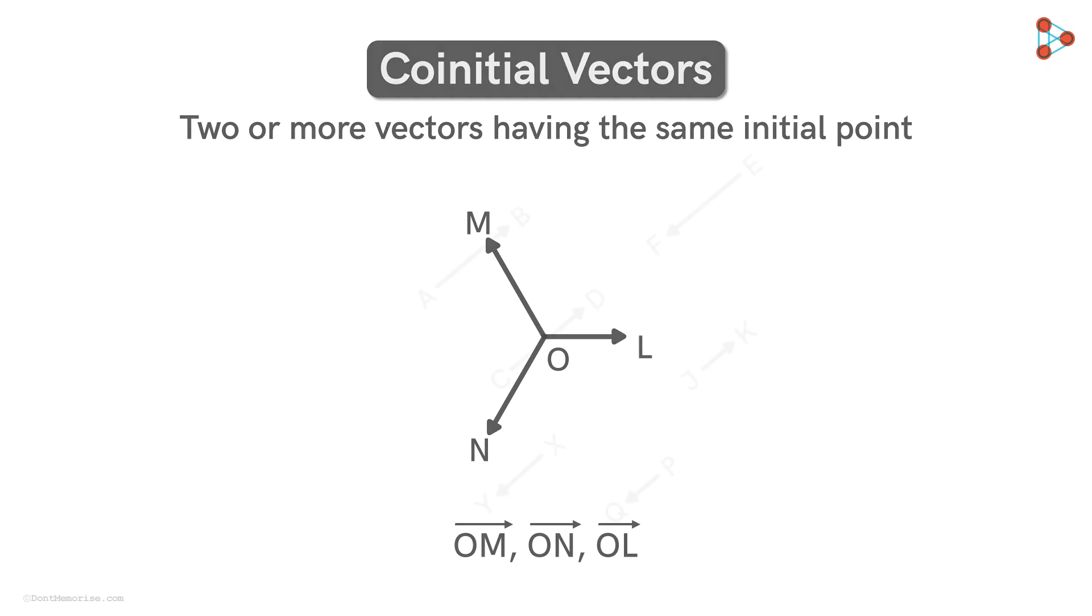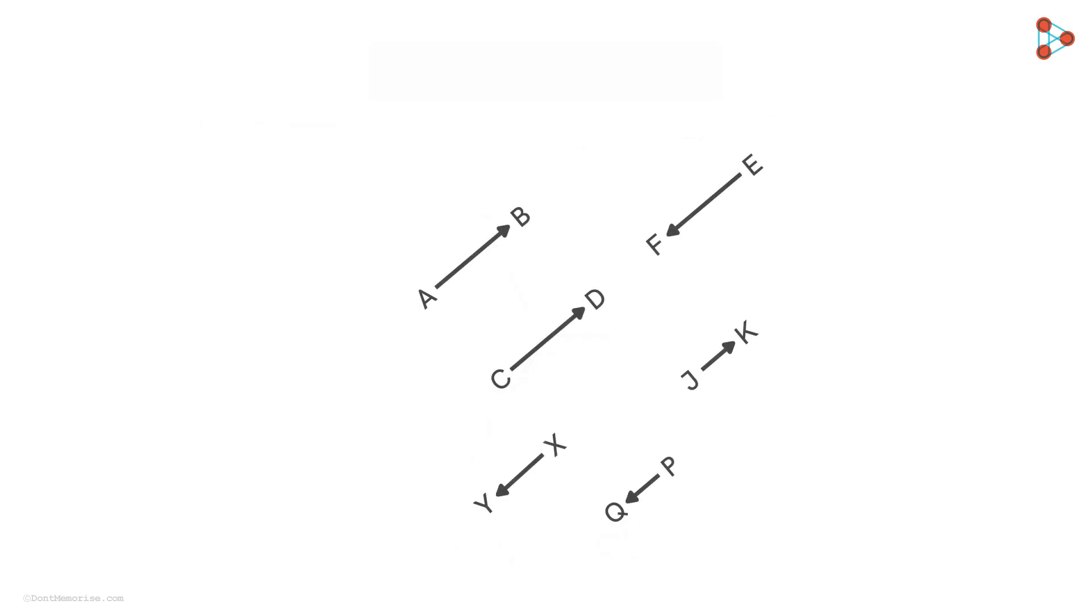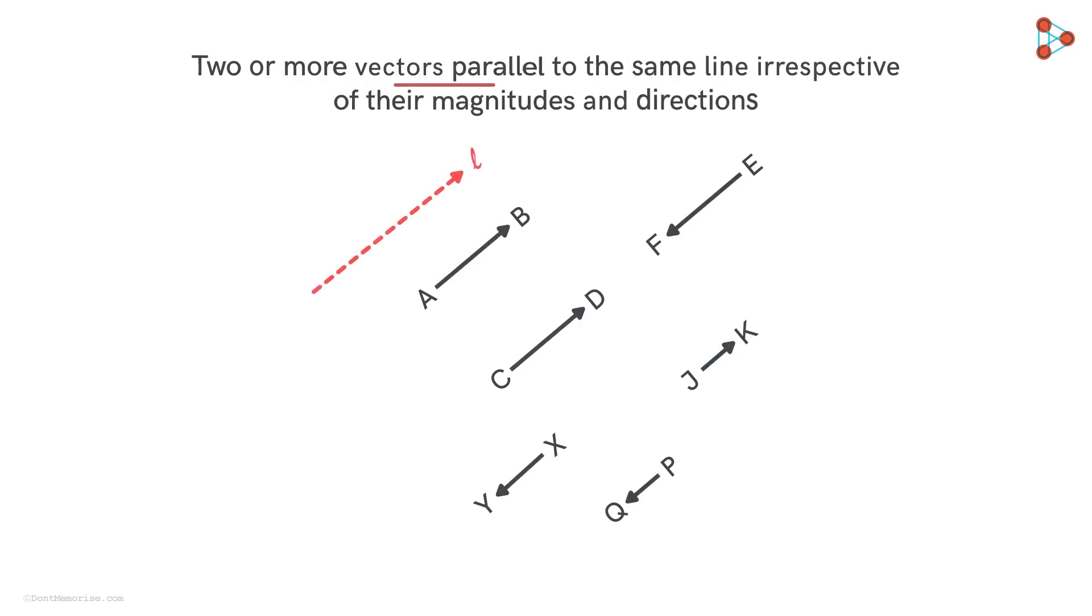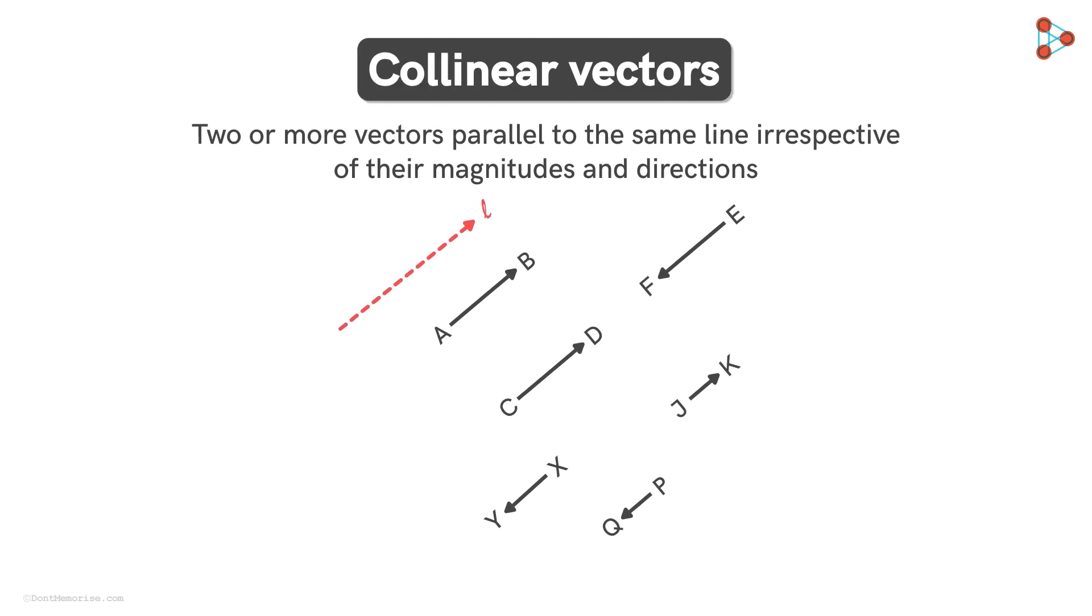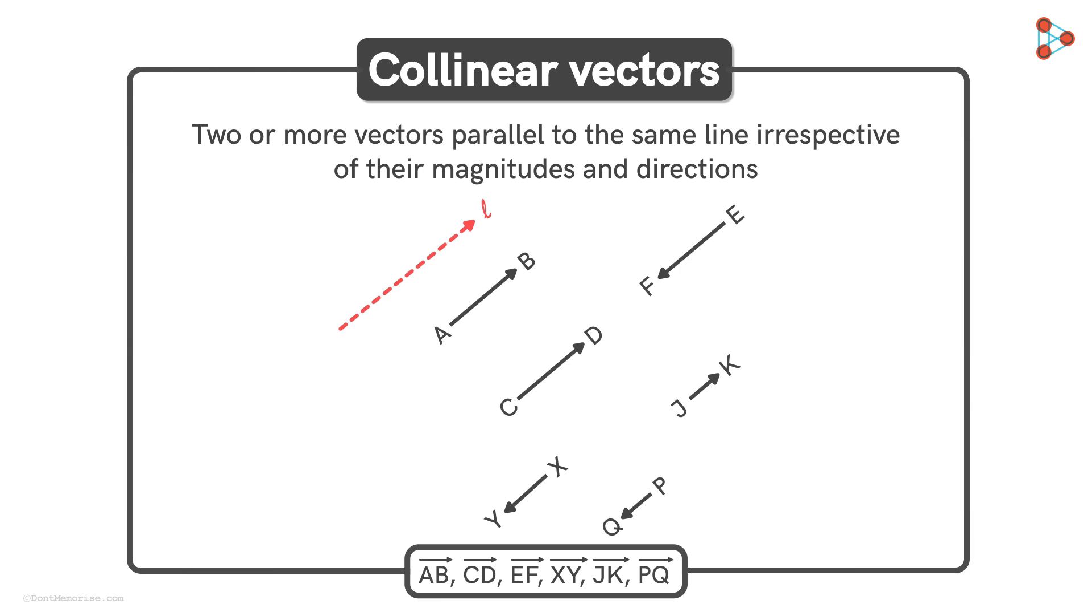Now consider these vectors. Here, they are all parallel to each other. Or we can say that they are parallel to this line. If two or more vectors are parallel to the same line, even though they have different magnitudes and directions, they are called collinear vectors. Thus, all these vectors are collinear vectors.